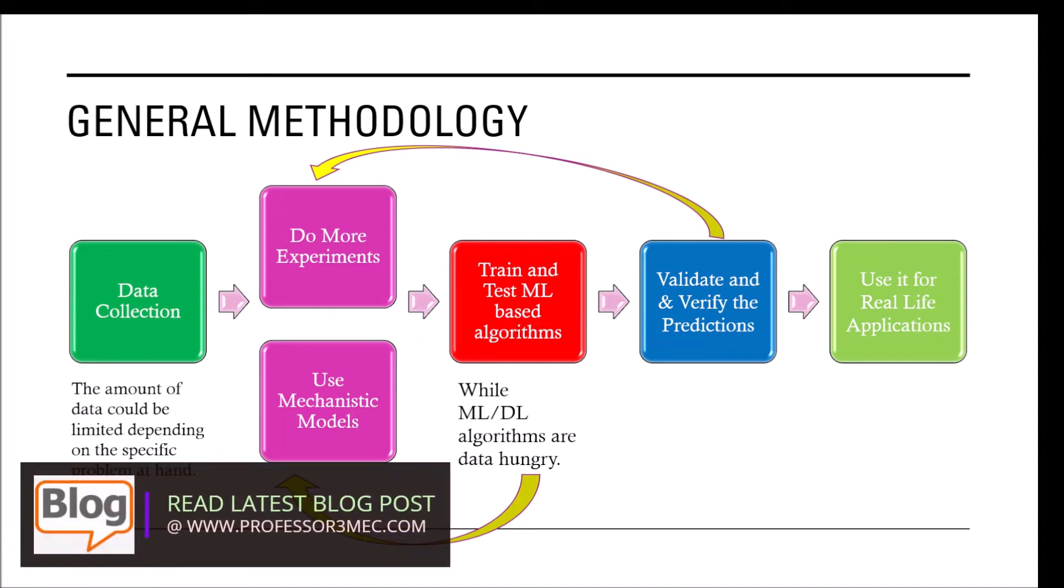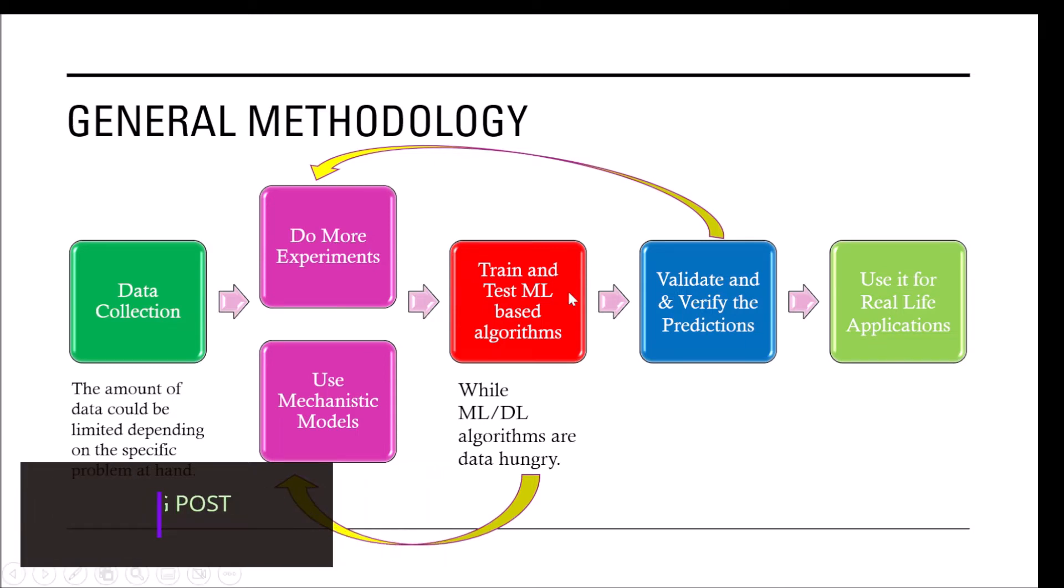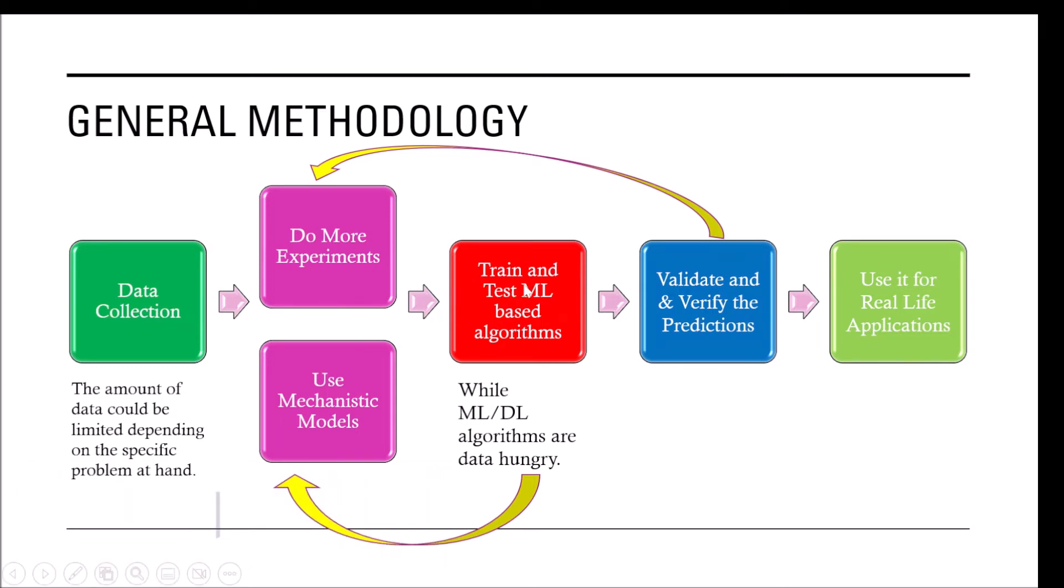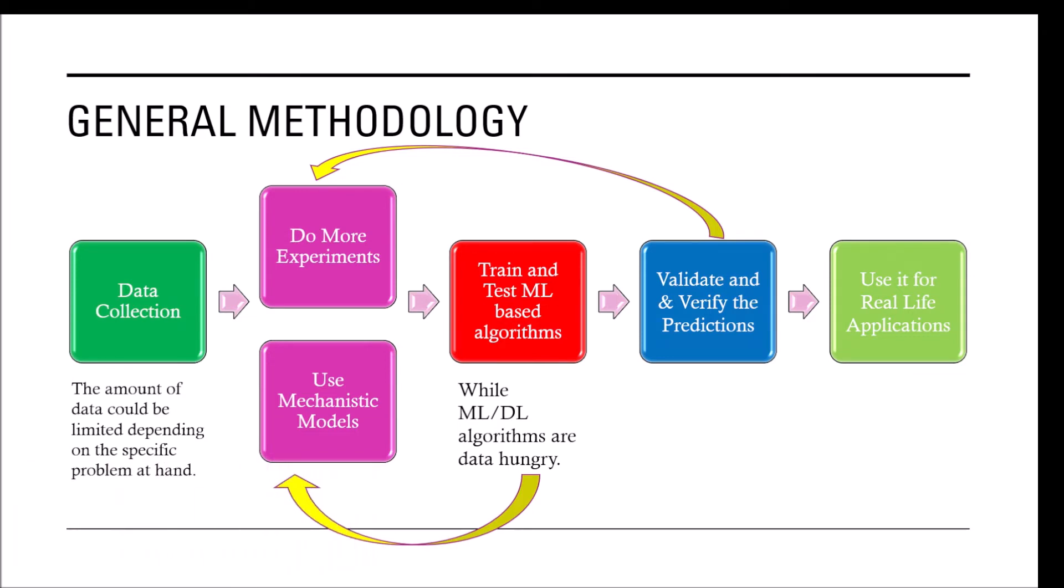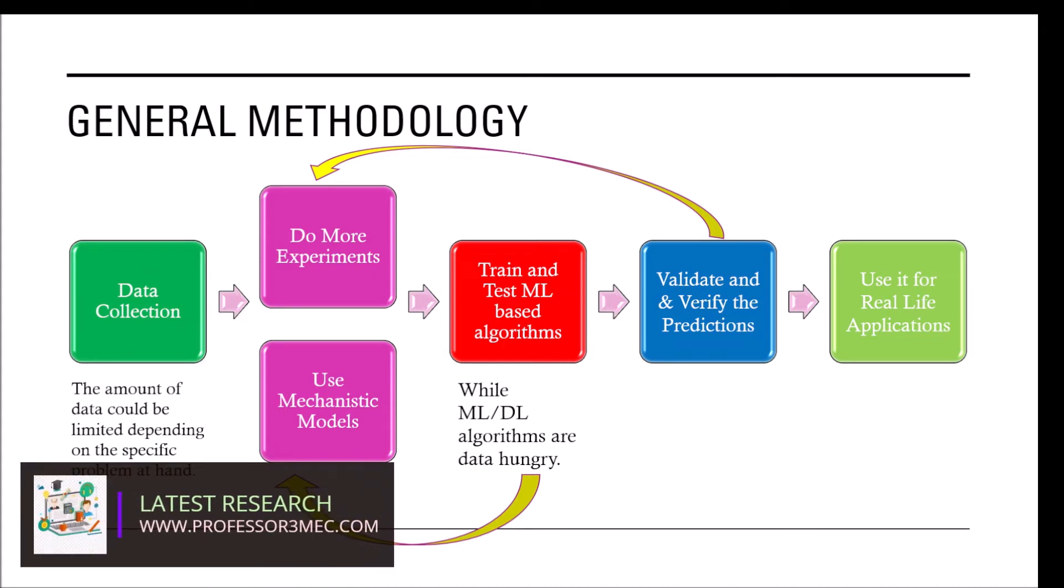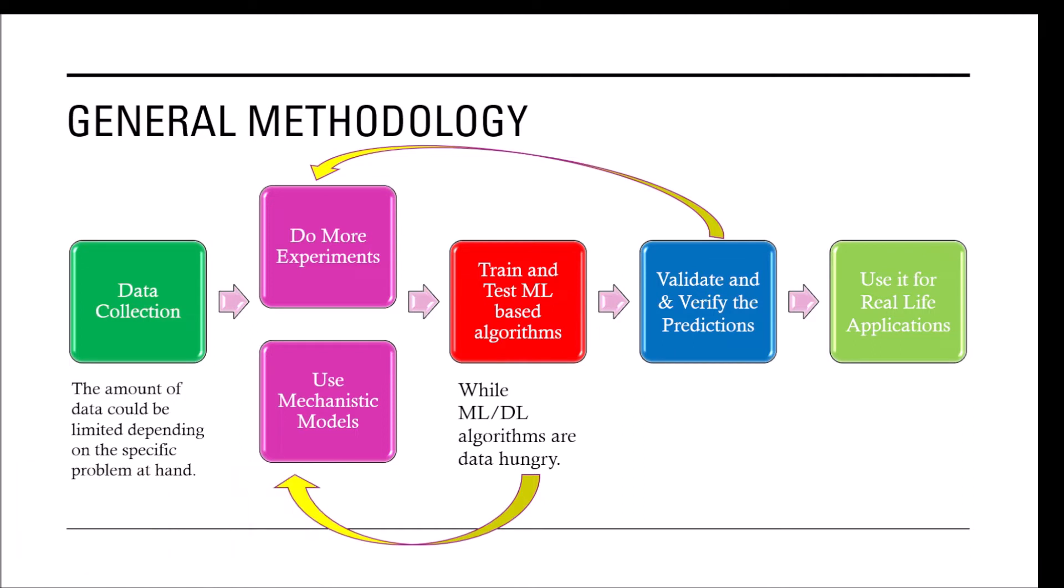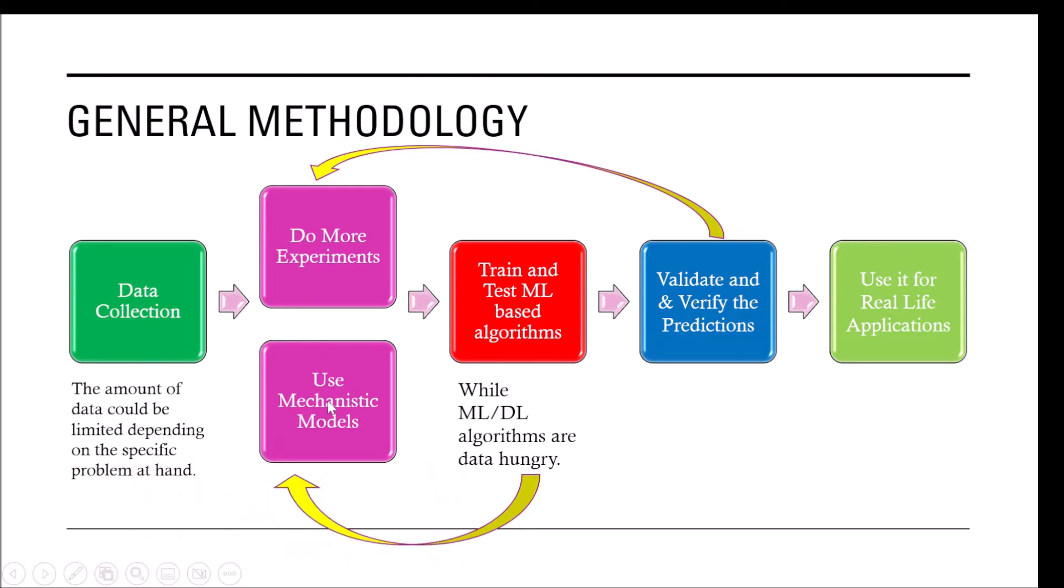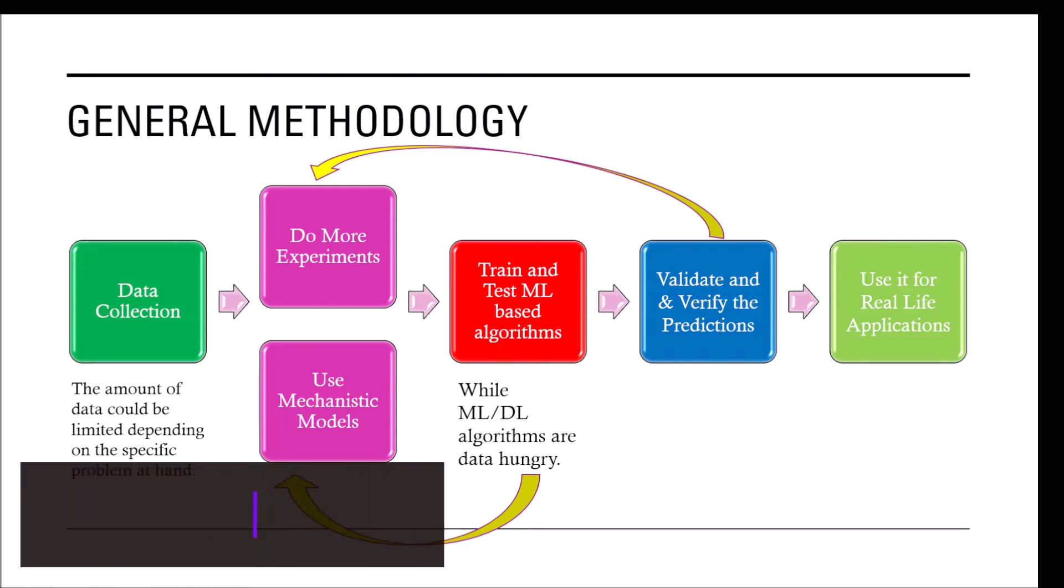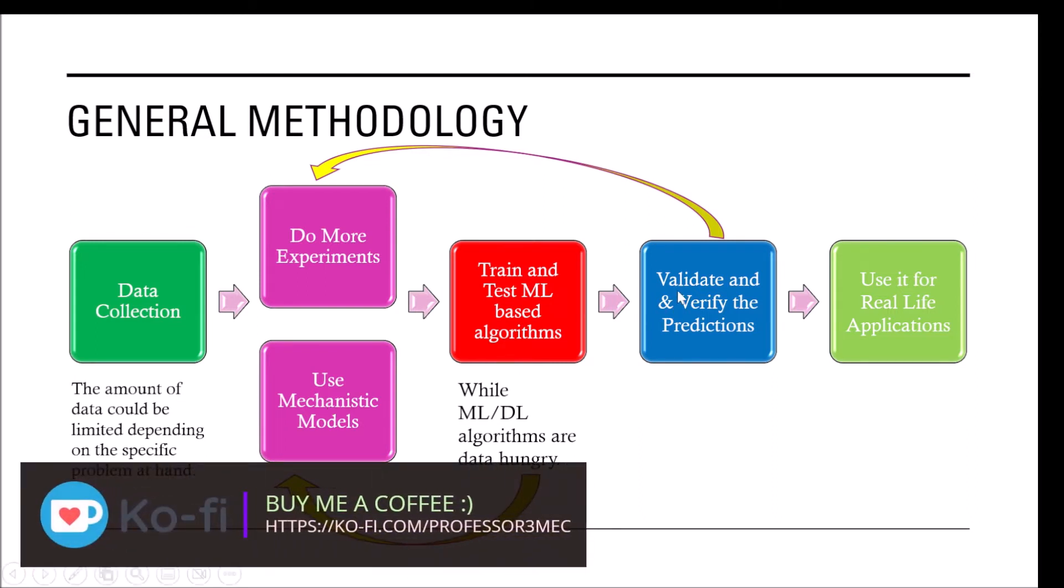Once you have done that and you are really happy that you have done everything right, but then when you start to validate and verify the predictions for different types of challenging data sets and see if your model which is already trained and tested can predict those behaviors, then you find out no, still it requires more data because we missed some of the data which is more crucial for real life cases. In that case again you have to go back and repeat the same exercise. So you can do more experiments or you can use mechanistic models which are already calibrated to generate more data.